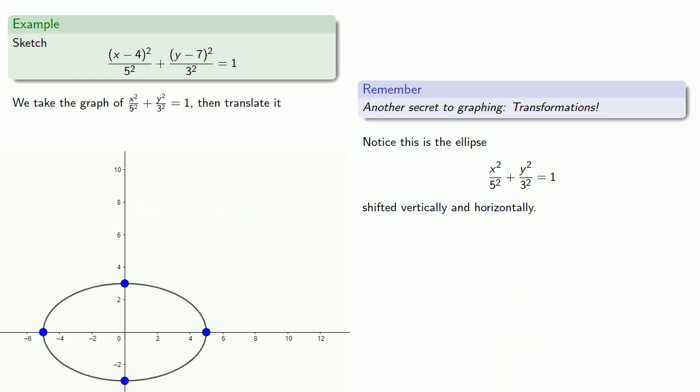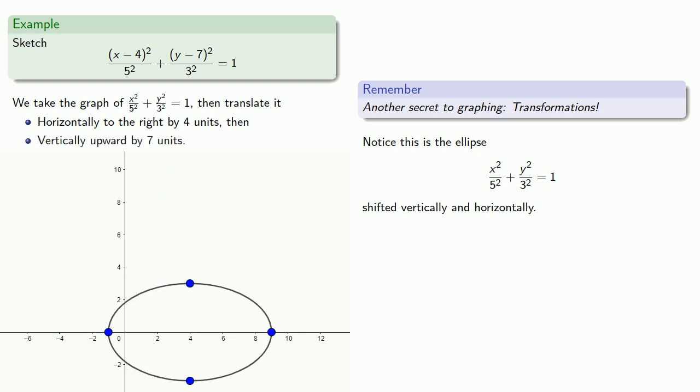Now, we'll take this graph of x squared divided by 5 squared plus y squared divided by 3 squared equals 1, and then we'll translate it horizontally to the right by 4 units, then vertically upward by 7 units.